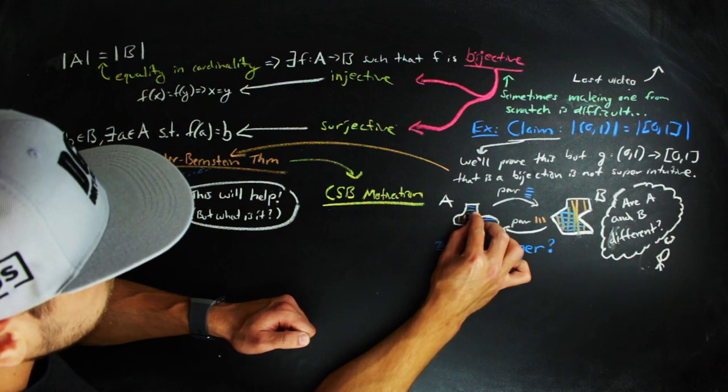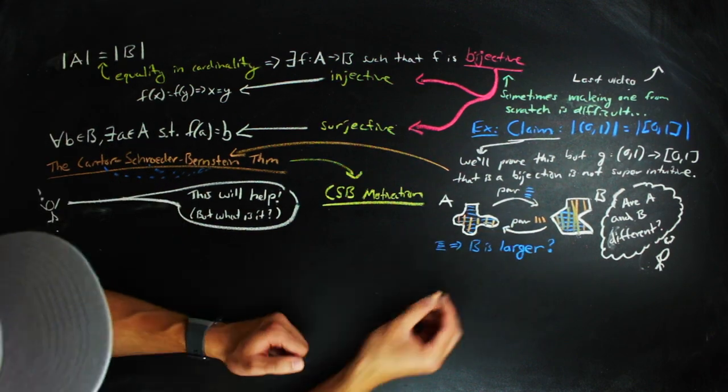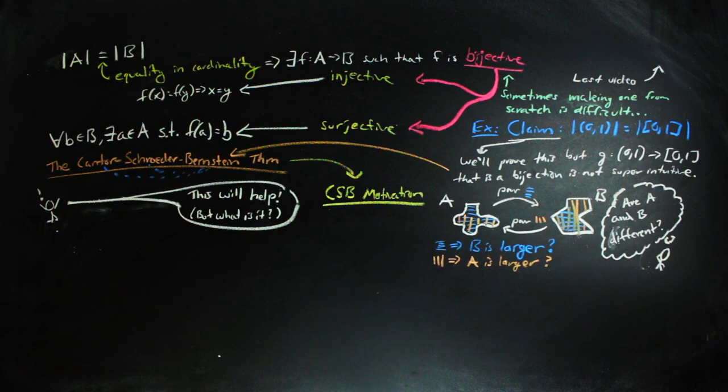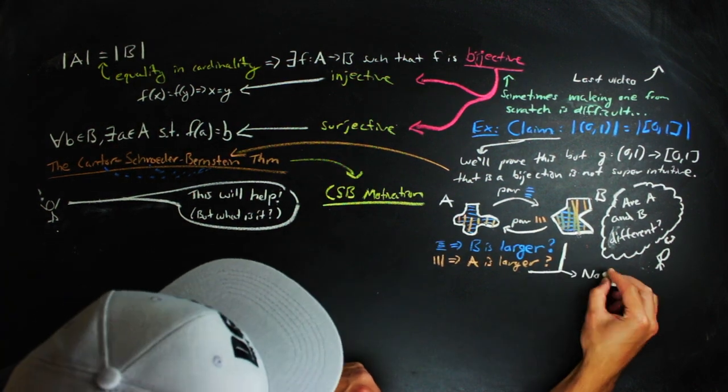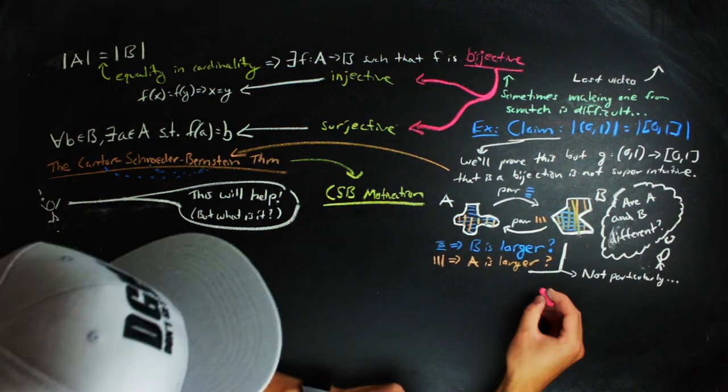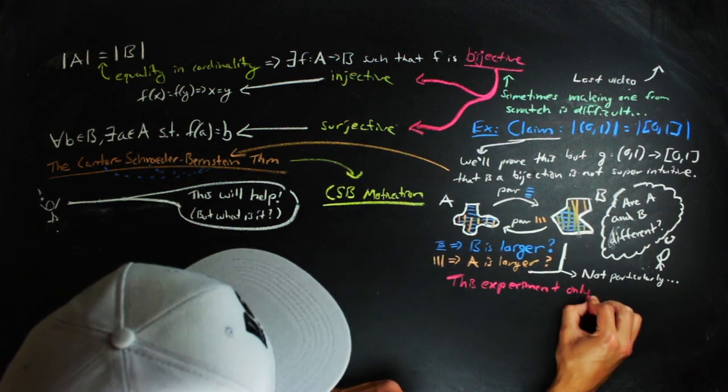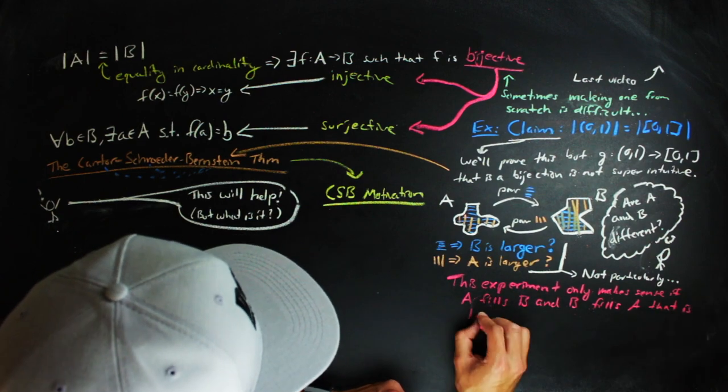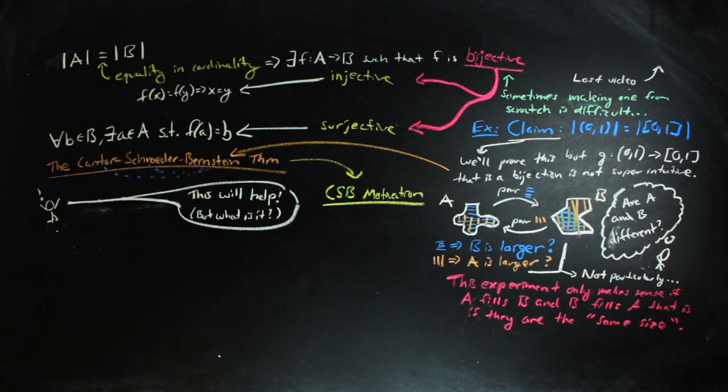And then something confusing happens. You'd expect that B would overflow A, but the volume of B only fills up part of A as well. Physically, this should feel like a contradiction, but it actually would be possible as long as that part of the container that you're filling up was actually the entire container each time. So if this were to happen, the containers must have been the same size.